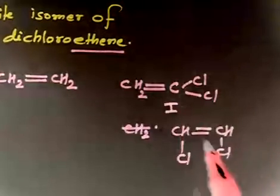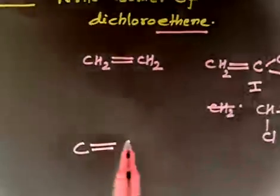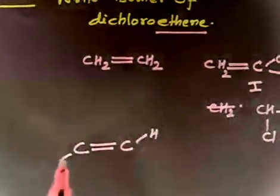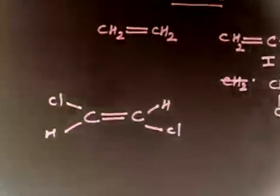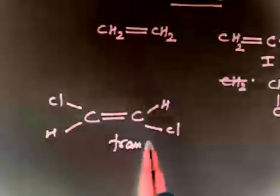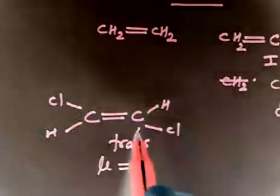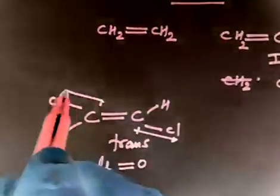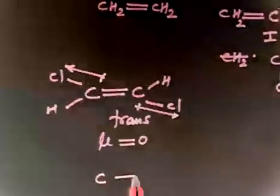But now this will exist as a cis and trans. So we will have CH, CL, CL. So this is trans. And our question also asks what is the dipole moment of this compound. So in this case dipole moment is zero. Because this dipole moment and this dipole moment cancels vectorially and gets cancelled.